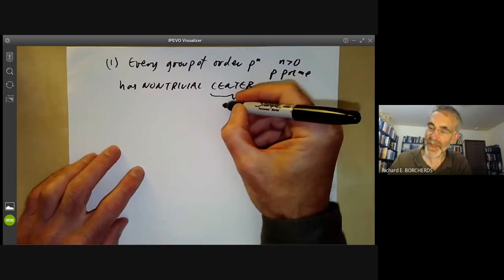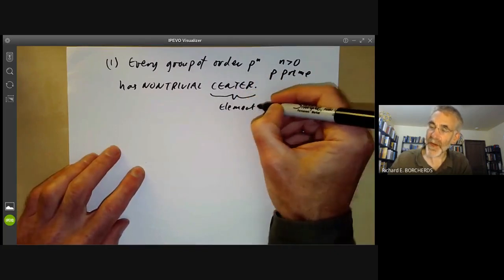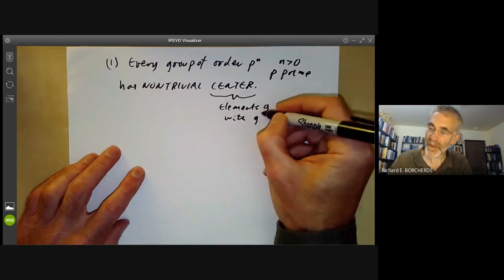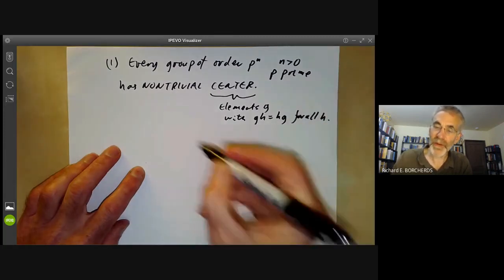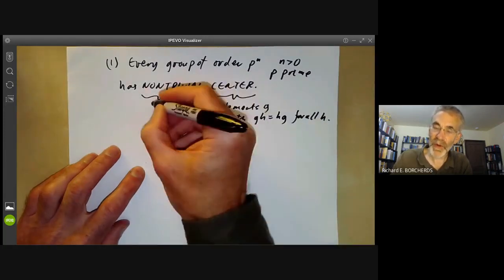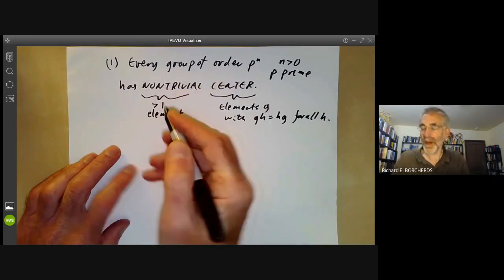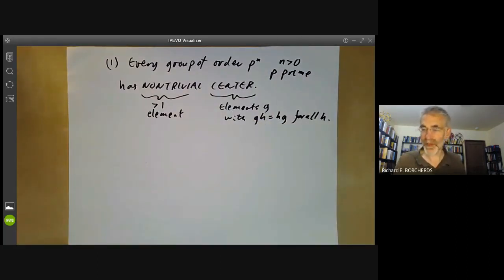So what does the centre mean? Well, the centre is the elements G that commute with everything else. So GH equals HG for all H. Non-trivial means more than one element. Obviously, the identity element is in the centre of any group, but that's not terribly interesting.